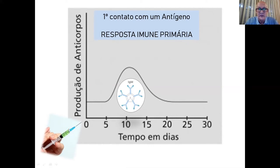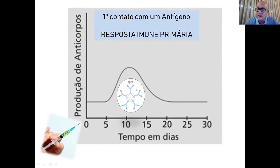Esse gráfico mostra que ao receber um determinado antígeno — uma vacina ou uma infecção natural — passam-se alguns dias antes de detectarmos anticorpos. Esses anticorpos são majoritariamente do tipo IgM. Produzimos cinco tipos de anticorpos diferentes, mas a primeira resposta — chamada de resposta imunoprimária — é sempre caracterizada pela presença de IgM, o que tem enorme importância na sorologia para diferenciar infecções recentes de proteção preexistente.